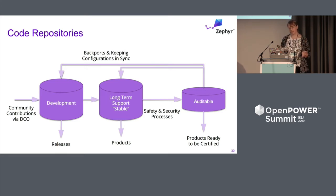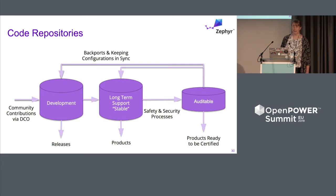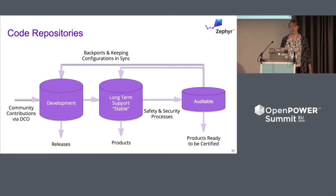So we've got a development repo that's now working on the 2.1 release. And we also have a long-term support stable, which is 1.14. We just put out 1.14.1, and we'll be working on the next update to that. A subset of the long-term stable is what we're calling auditable, and that's what we're working on hardening for the safety world.